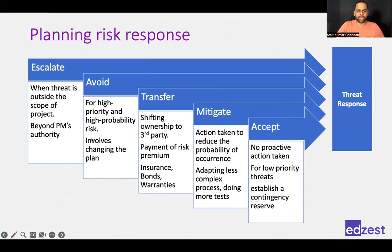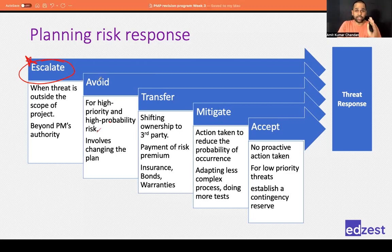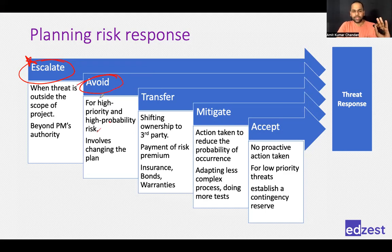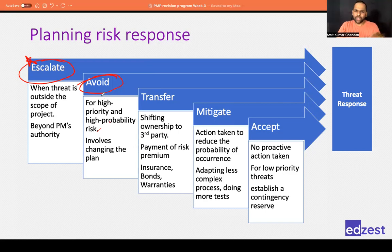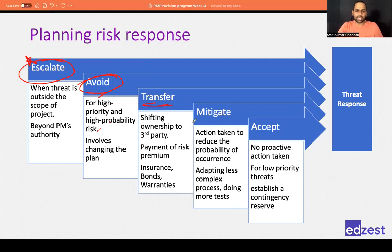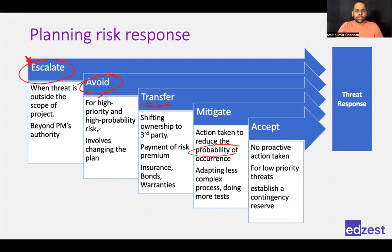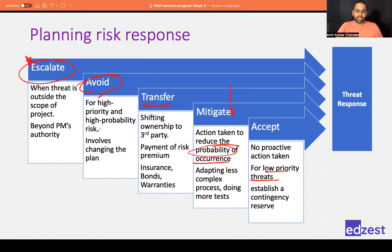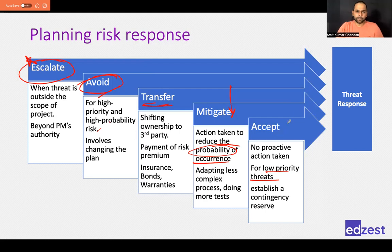So there are five risk responses. If the risk is beyond your authority, escalate. If it is high-probability — 80–90% chance of happening — try to avoid the event itself. If you cannot avoid, transfer it to somebody else by buying insurance or finding someone willing to take that risk. For most risks, the maximum you can do is reduce the probability — that is mitigate. For low-priority risks with little probability and little impact, accept them and keep a contingency reserve.